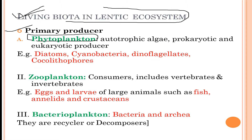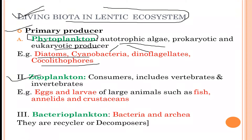Phytoplankton include algae, autotrophic algae, and prokaryotic and eukaryotic producers, such as cyanobacteria, dinoflagellates, and coccolithophores. The consumers in this ecosystem are zooplankton, which include eggs and larvae of large animals such as fishes, annelids, and protists.